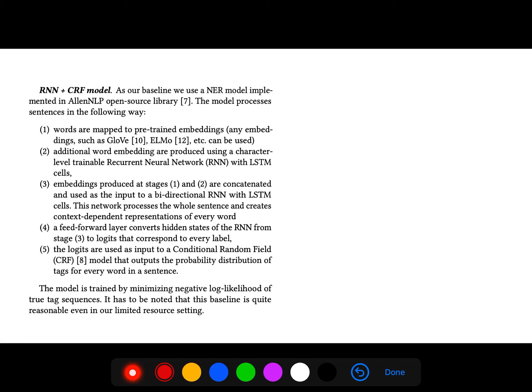Here they use an RNN with conditional random field model because this is their base model. Words are mapped using pre-trained embeddings such as GloVe, and they use additional character embeddings as well. They put these into an LSTM.